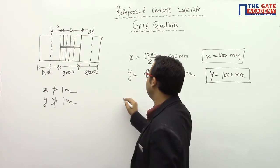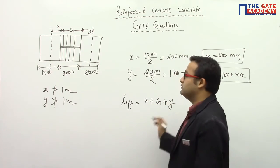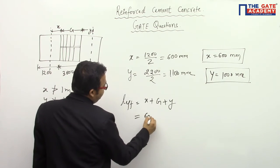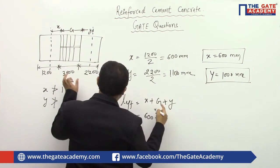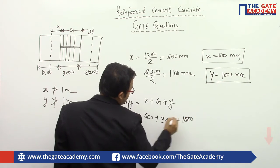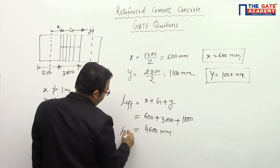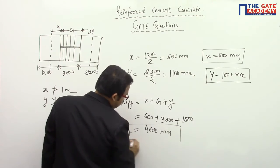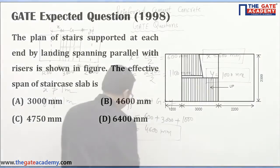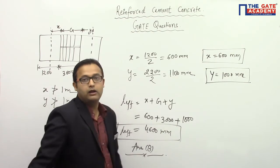The effective span is calculated as: L_effective = x + g + y. Substituting the values: x = 600 mm, going g = 3000 mm, and y = 1000 mm. So the effective span equals 4600 mm. Looking at the four options, the answer is option B: 4600 mm. Thank you so much.